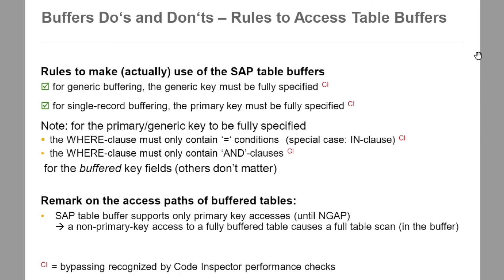A few rules to access table buffers: for generic buffering the generic key must be fully specified, and for single record buffering the primary key must be fully specified. The WHERE clause must contain conditions on the primary or generic key fields, and must only contain AND clauses for buffer key fields. SAP table buffers support only primary key accesses; a non-primary key access to a fully buffered table causes a full table scan in the buffer.